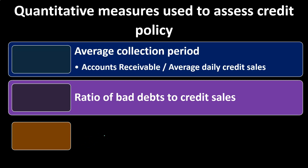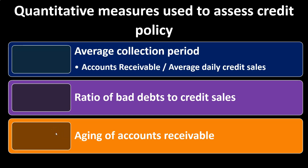Another measure is the ratio of bad debt to credit sales. Bad debts are accounts receivable where customers simply didn't pay us as agreed. By looking at the percentage of credit sales that turned into bad debt, we can assess whether we're doing business with people we shouldn't. If bad debt becomes high relative to credit sales, it may be time to tighten the credit policy to deal with people more likely to pay — though we have to consider whether restricting credit would reduce sales so much that it's not worth it.